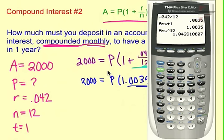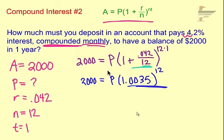So again, the more decimals we use in our problem, the more accurate our answer will be. So 2,000 equals P times that number, which was 1.042818007.